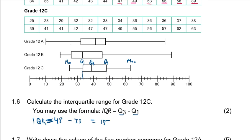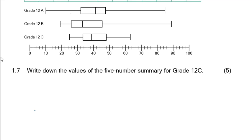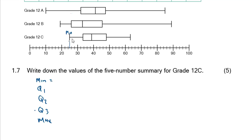Question 1.7: Write down the values of the five-number summary for 12c. The five-number summary consists of: minimum, Q1, the median (Q2), Q3, and the maximum. Looking at the 12c box and whisker plot, the minimum is at 25 — it's between 24 and 26. Q1, going down the number line, is between 32 and 34, so it's 33.